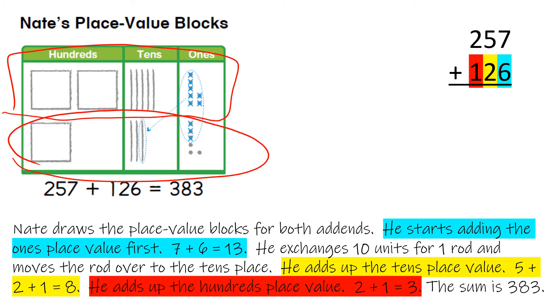He exchanges 10 units, and this is what this is, for one rod. And moves the rod over to the tens place, which is exactly what he did. He adds up the tens place value, 5 plus 2 plus 1.